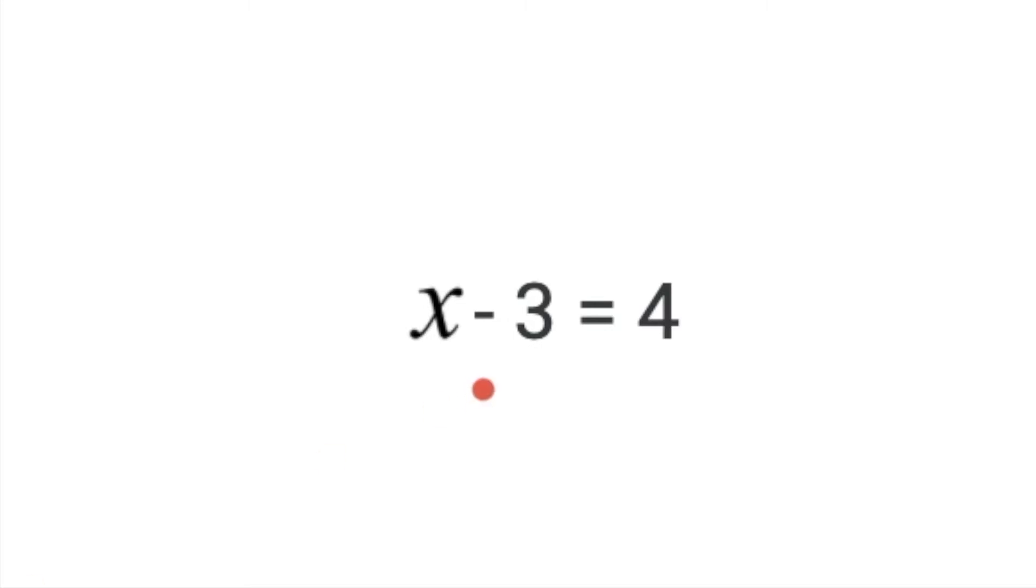And our subtrahend and our difference, the two smaller parts of our problem, we do know what their values are. Their values are 3 and 4. So we are subtracting 3 from x, and our leftover difference between the two is 4.